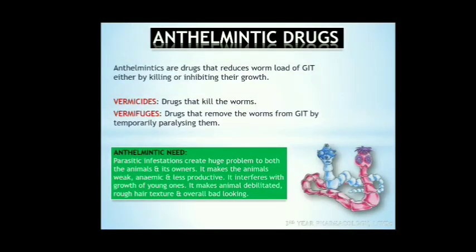Now comes anthelmintic drugs. Anthelmintics are drugs that reduce worm load of the gastrointestinal tract either by killing or inhibiting their growth. Vermicides kill the worms; vermifuges temporarily paralyze the helminths and remove the worms from the GI tract with purgatives. Parasitic infestations create huge problems in both animals and their owners, making the animal weak, debilitated, anemic, and very less productive — which is economically not viable. It interferes with growth of young ones, making animals have rough hair coat and very unhealthy appearance.